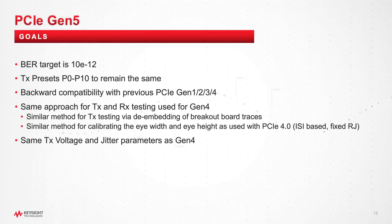There was a pretty big change between how we did transmitter and receiver validation for Gen 3 when we went to Gen 4, especially on the receiver side. To be able to do Gen 5 within the timeframe that was specified, we basically thought we would want to do it the same way. There's always going to be some small differences, but the idea of using an external ISI channel was really key.